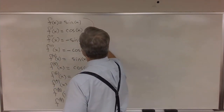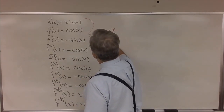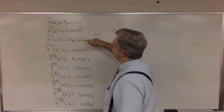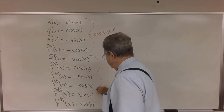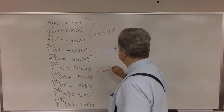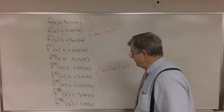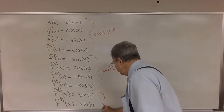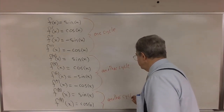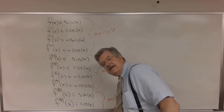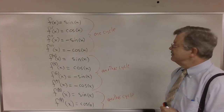We'd say that this is one cycle of the derivatives, and the cycle is: sine, cosine, negative sine, negative cosine — and then the cycle starts all over again. So here's another cycle: sine, cosine, negative sine, negative cosine. The pattern repeats every four derivatives.